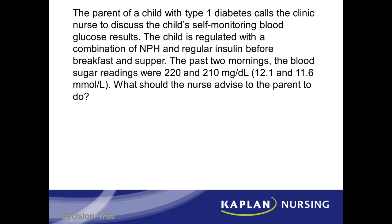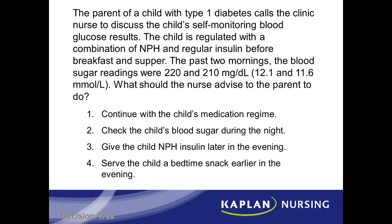We know what it is. So let's read through our answer choices now and determine: are they assessment or implementations? Number one: continue with the child's medication regime — that is an implementation. Number two: check the child's blood glucose during the night. Number three: give the child NPH insulin later in the evening — that is an implementation. Or number four: serve the child a bedtime snack earlier in the evening — and that too is an implementation.